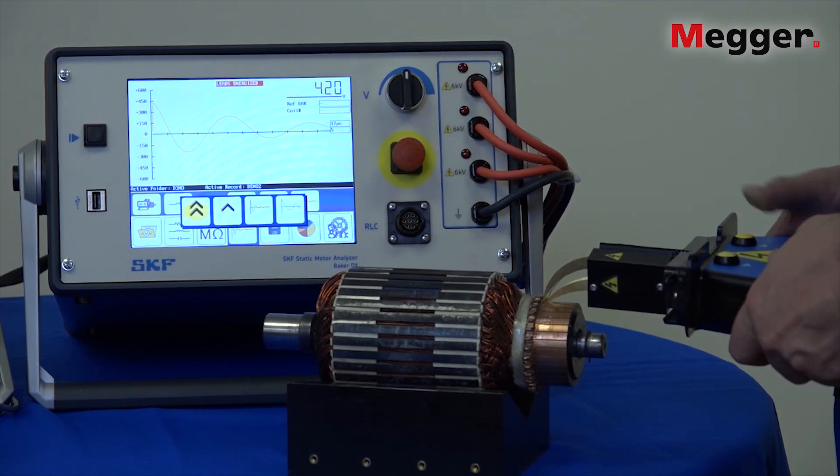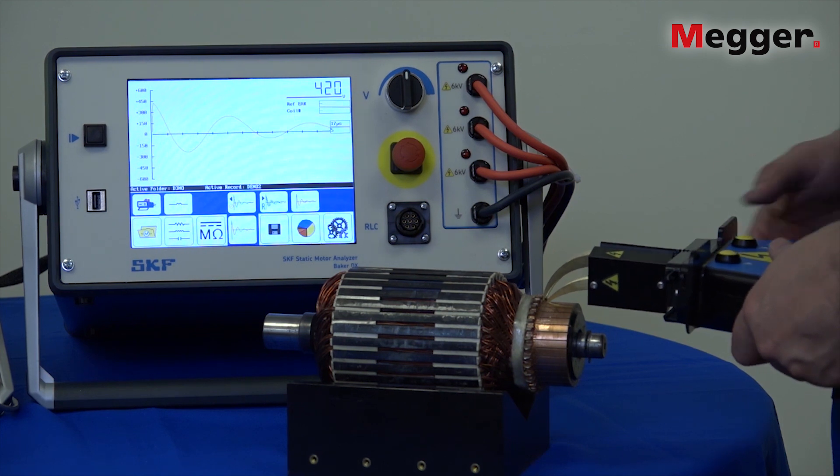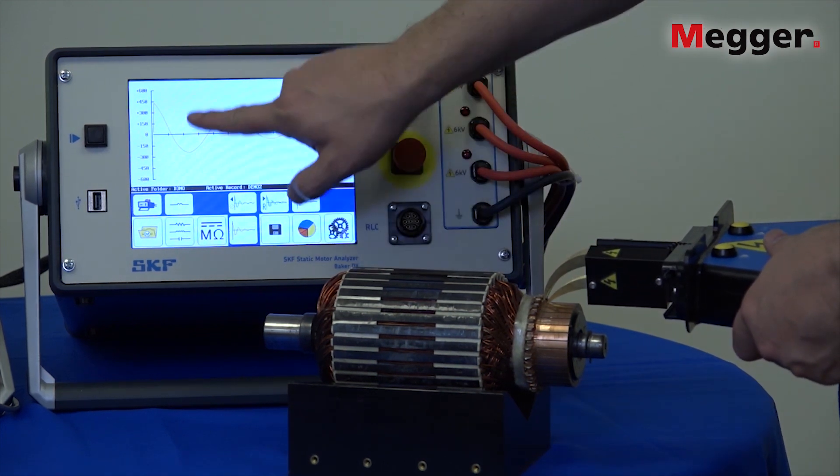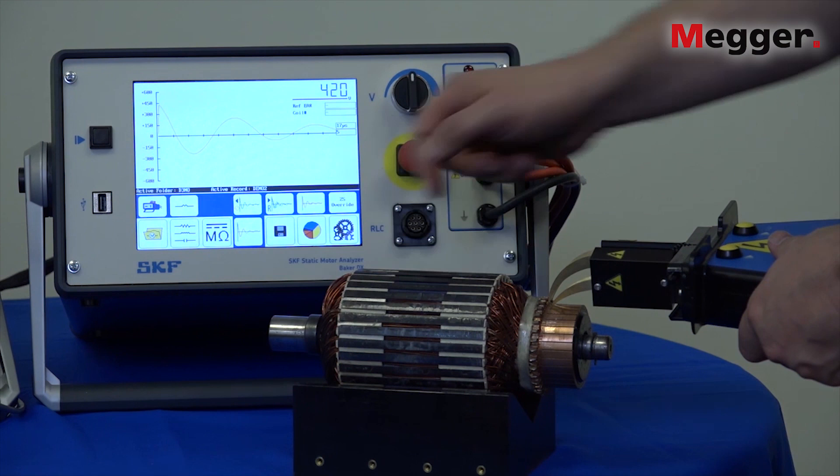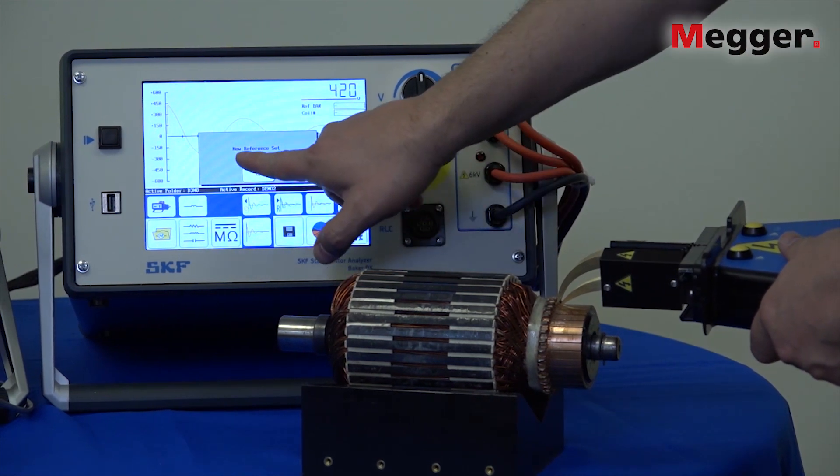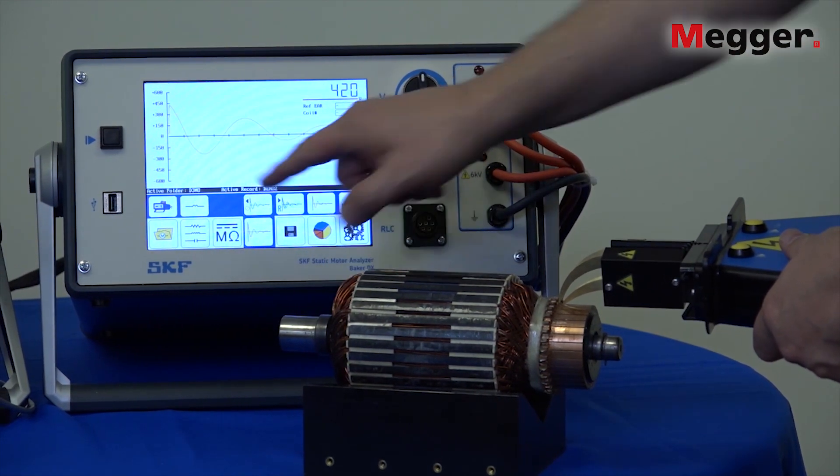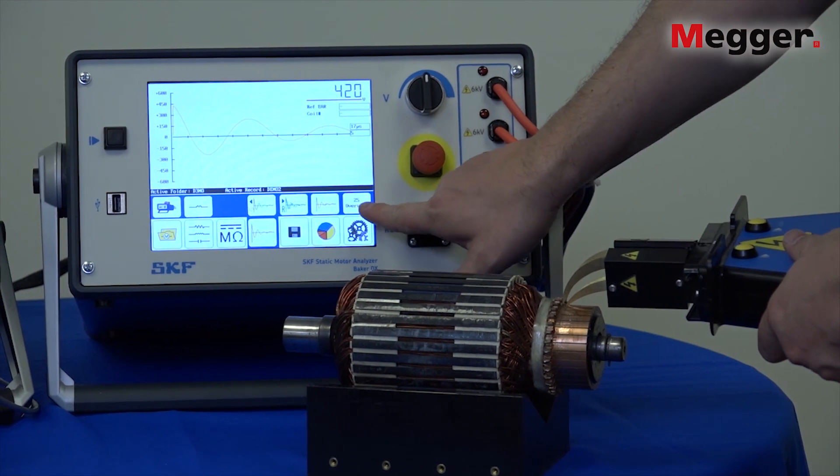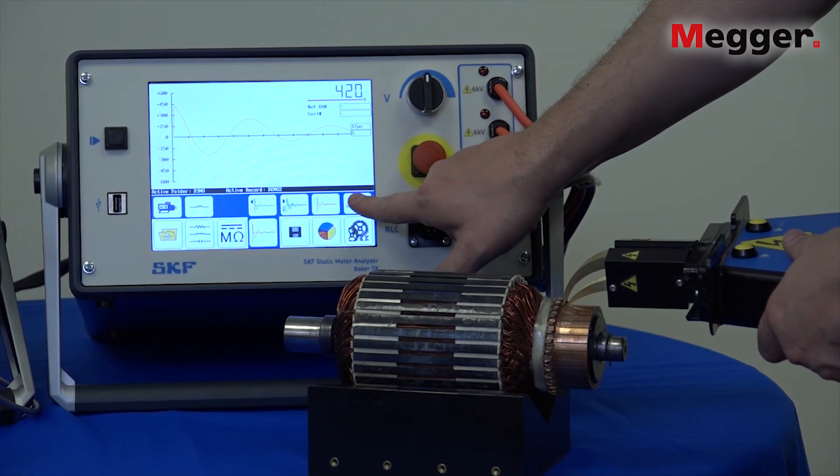And then I'll release the test button and now I want to set that waveform as my reference to compare all other waveforms. It says new reference set acknowledged and now I need to select the ZS override, the zero stop override option.